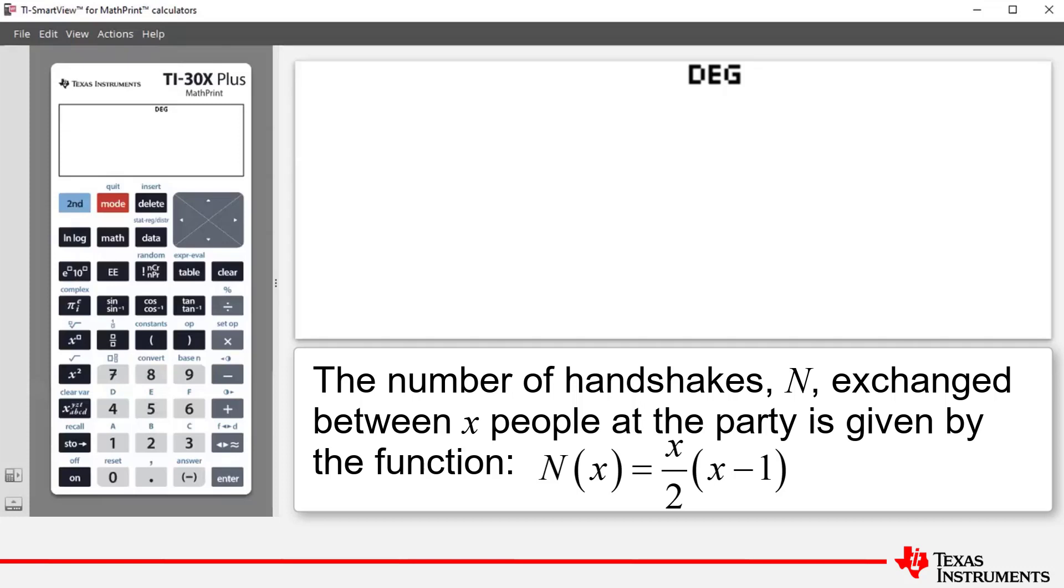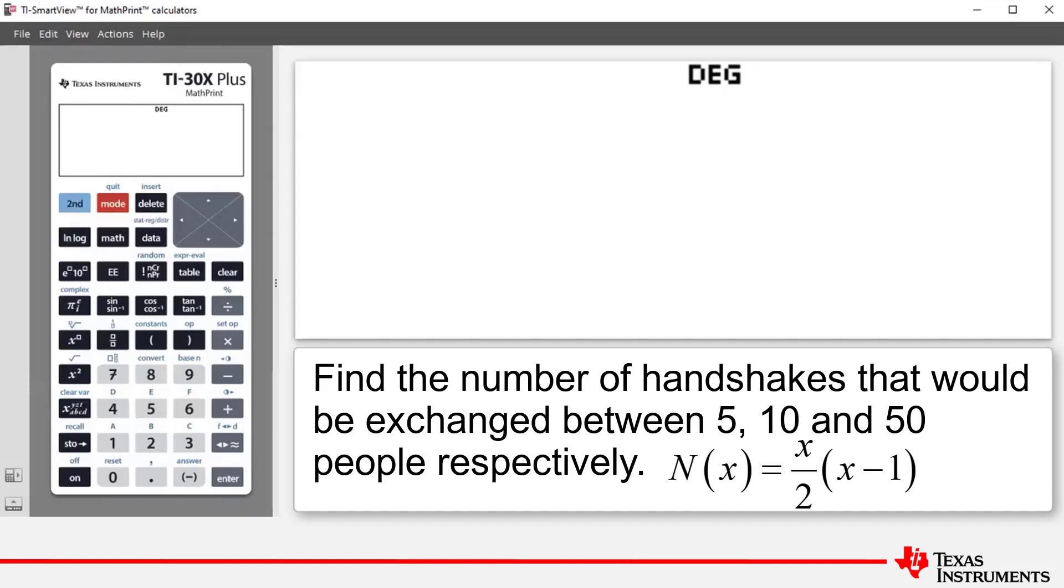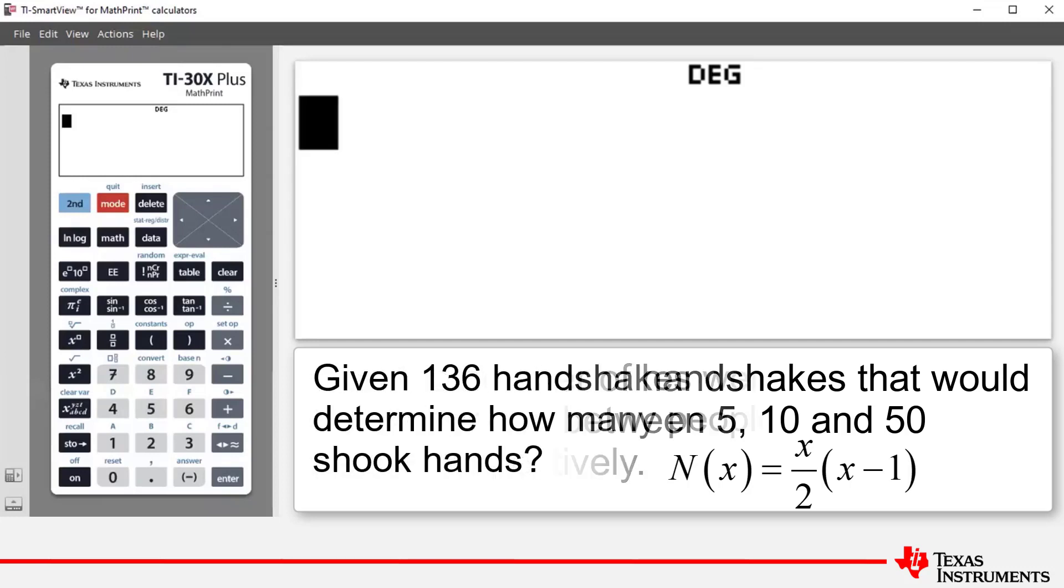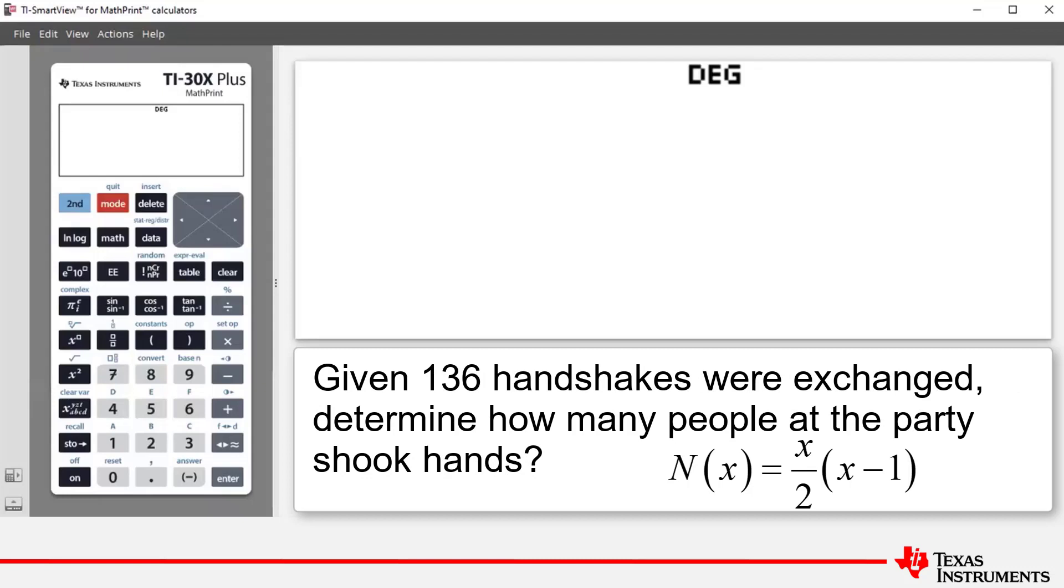Part A asks us to find the number of handshakes that would be exchanged between 5 people, 10 people, and 50 people respectively. And part B asks us that given 136 handshakes exchanged, determine how many people at the party shook hands.